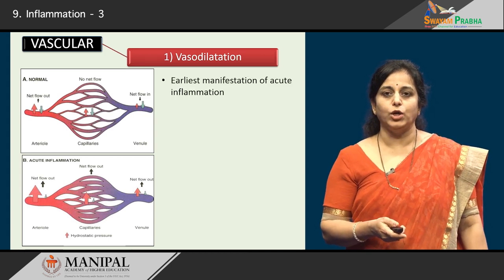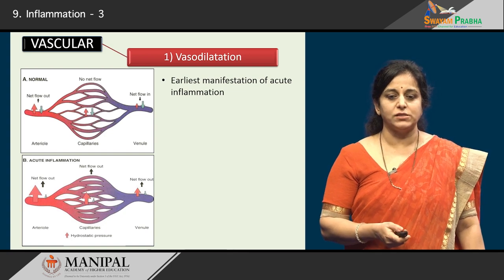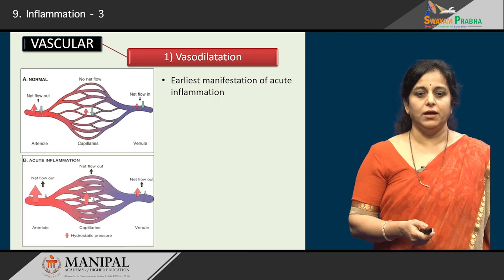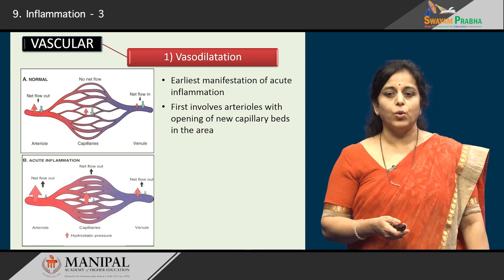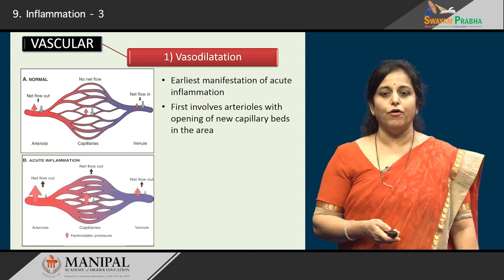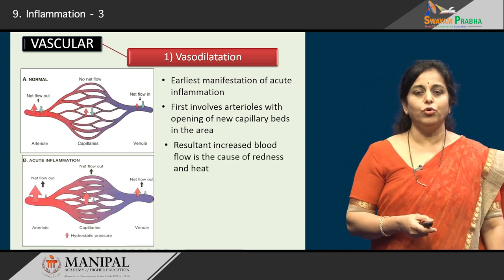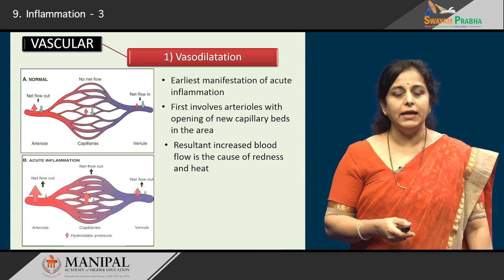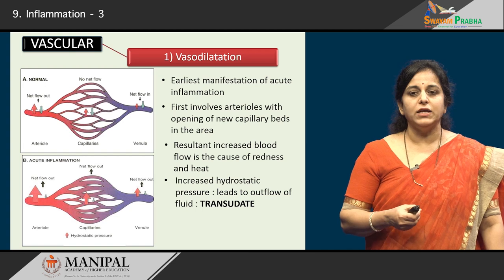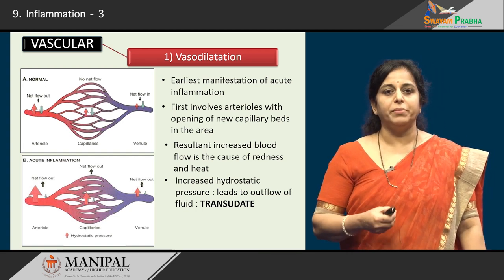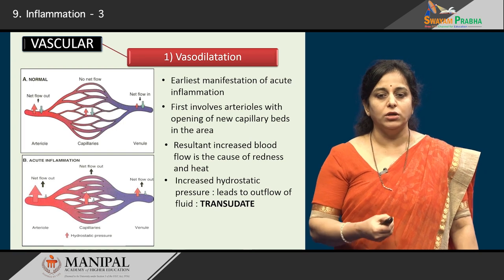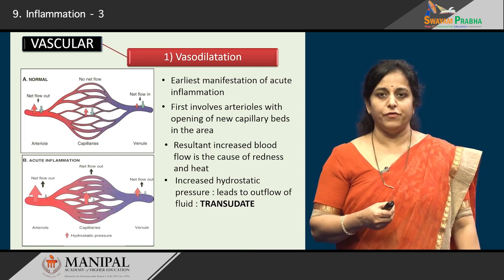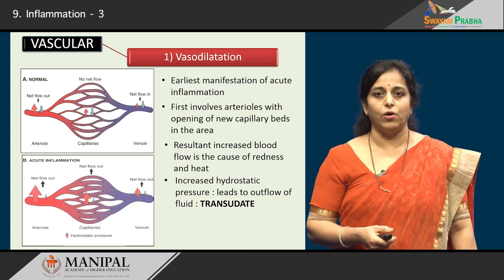Vasodilatation is the earliest manifestation of acute inflammation. You can see in the pictures on screen that in normal circulation the blood vessels are regular, whereas in acute inflammation the blood vessels have dilated and there is more sprouting of vascular channels. This happens first in arterioles, with opening of new capillary beds in the area of inflammation, resulting in increased blood flow — which is the cause of redness and heat. Because of increased blood flow, there is increased hydrostatic pressure, causing outflow of fluid out of the systemic circulation into the tissue. This outflow of fluid early in inflammation is called transudate.